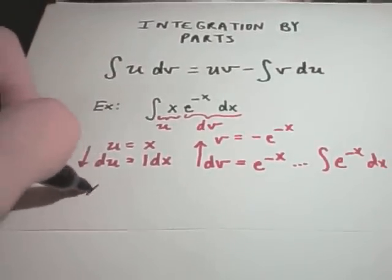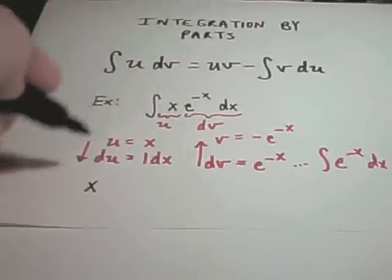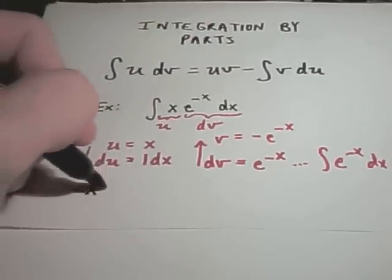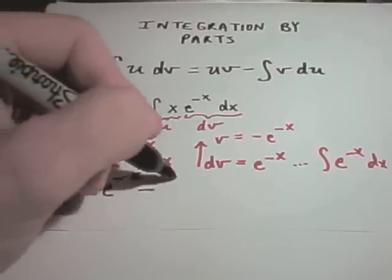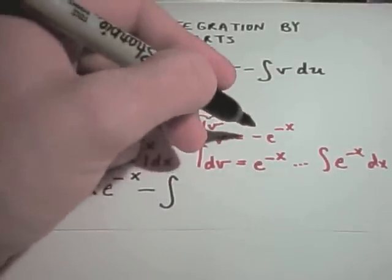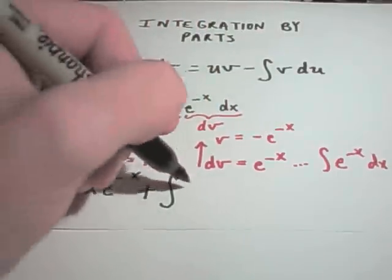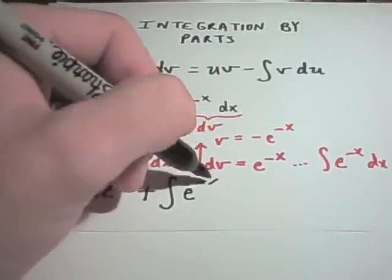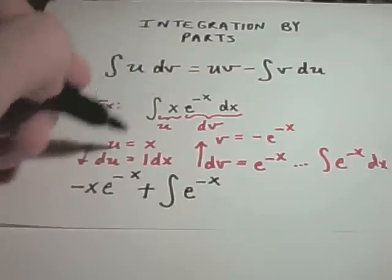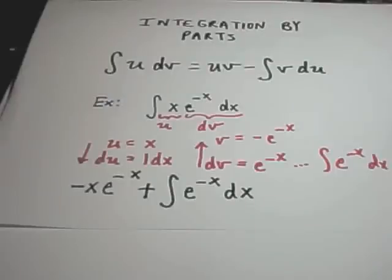It says I have u, which is x, times v, which is, I'll pull the negative out front, e to the negative x. And then I subtract away v, which again is negative e to the negative x. I'm going to pull the negative out front and make it positive. And then it says you tack on your du, which is simply the term dx.